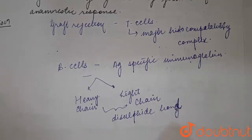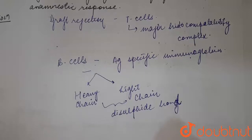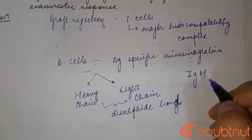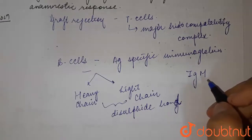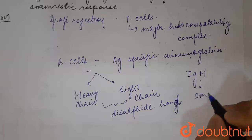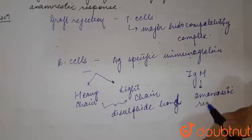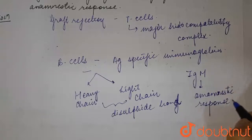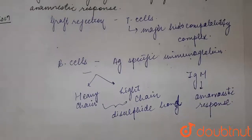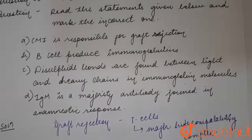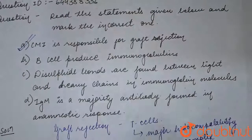If we talk about IgM, the primary response to a new antigen generally peaks at 5 to 10 days, and this IgM antibody is first replaced by IgG, which means they generally produce the anamnestic response. These are the first antibody which reacts to any allergens. So, our answer to the question would be option A, which is the incorrect statement. The answer is option A.